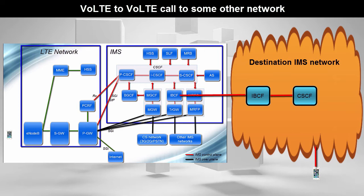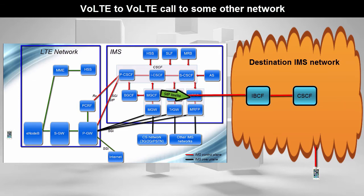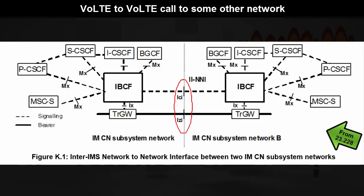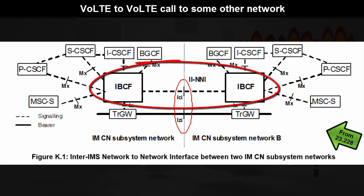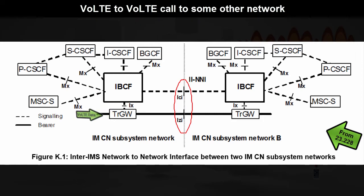VoLTE to VoLTE call to some other network. Let's first talk about the signaling part. In this case, the SCSCF will determine that the called party is not within this IMS network and forward this SIP invite to the relevant IBCF. The IBCF present in the source IMS network will forward this SIP invite to the IBCF present in the destination IMS network. Then, the IBCF in the destination IMS network will further forward this message to the CSCF of the called party. Here is a picture from the IMS specification for more clarification — you can see how two IBCFs present in two different IMS networks are integrated to facilitate inter-operator VoLTE calls. Note: voice call data will go from the PDN gateway to a transition gateway, which will further send this data to the transition gateway of the destination IMS network.